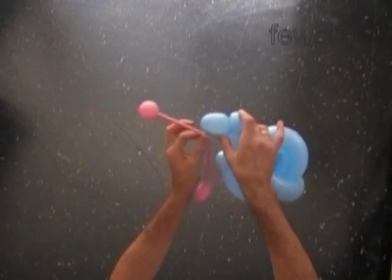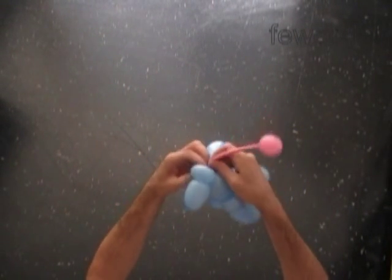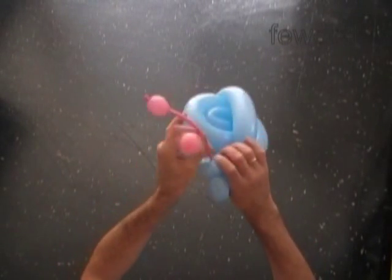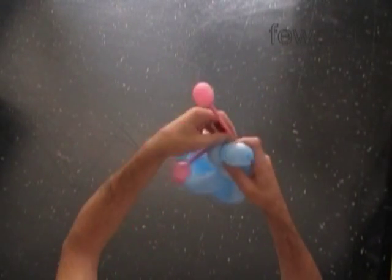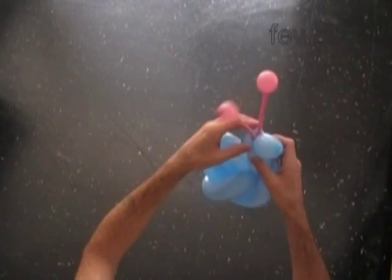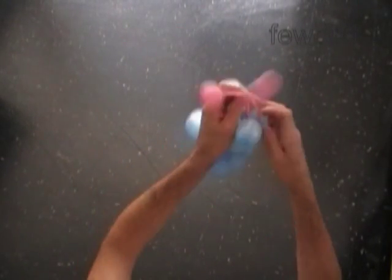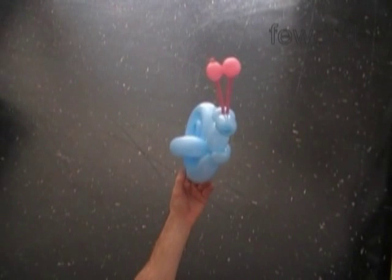Now we just have to attach antennas to the head of the snail. Wrap the antenna around the second bubble of the head. Fix antennas to make it look nice. That's all. We have made snail with antennas.